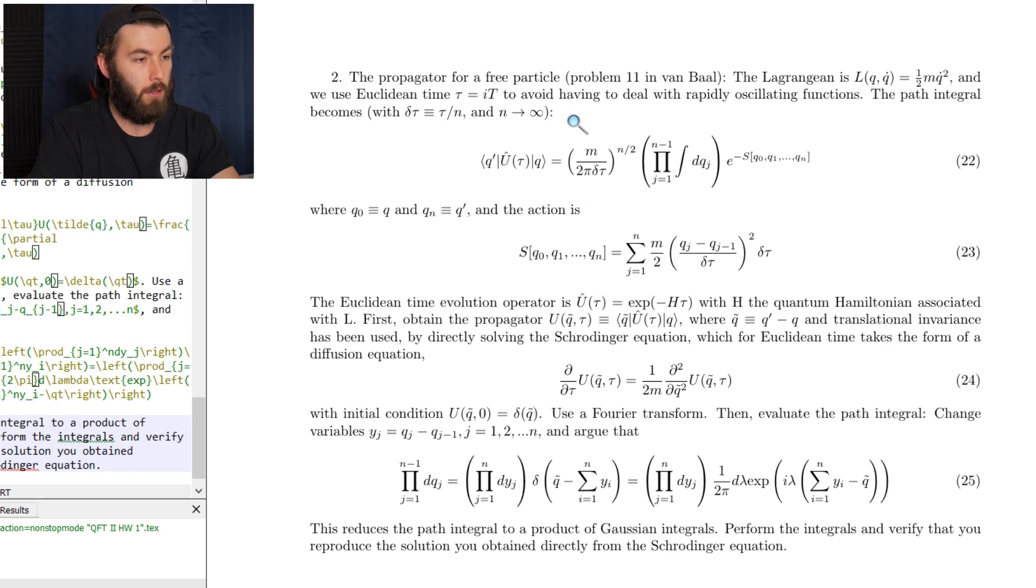So it says the propagator for a free particle, problem 11 in Van Bale, has a certain Lagrangian. We're using Euclidean time. I'm going to explain what this stuff means in just a little bit. The path integral becomes this expression here. We've got some u-hat, we've got some product of integrals, and some e to the minus s. What does all this stuff mean?